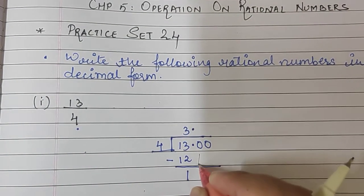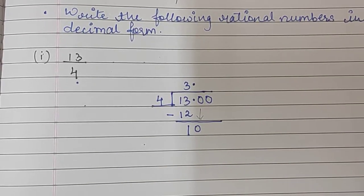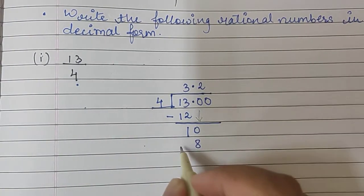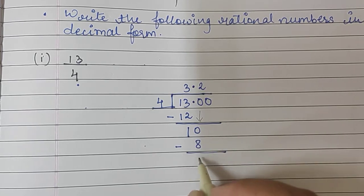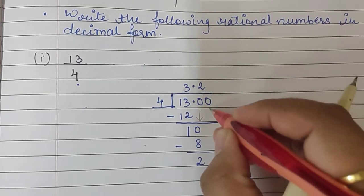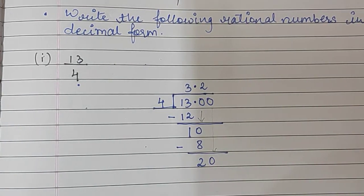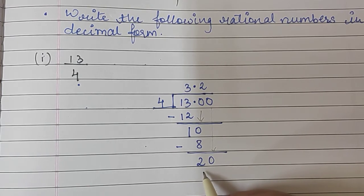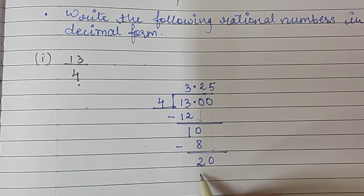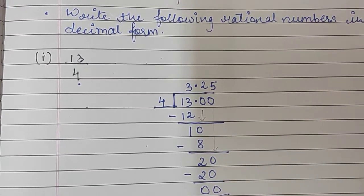4, 3 is 12, minus sign. What comes here? 1. Now, the next number, we are going to bring the 0 down and right here make it 10. Now, 4, 2 is 8. If we subtract, what remains? 2. Just bring the second 0 down like we do in the normal division. This is 20, 4, 5's are 20 and the remainder is 0.